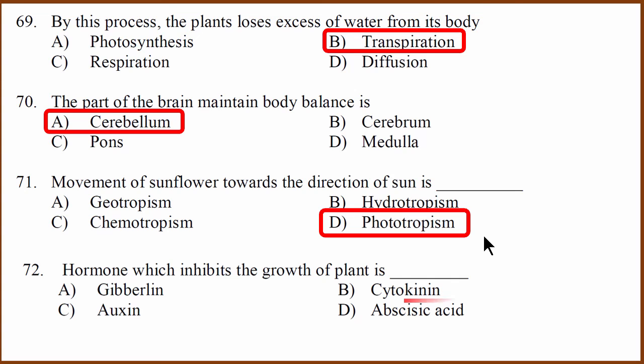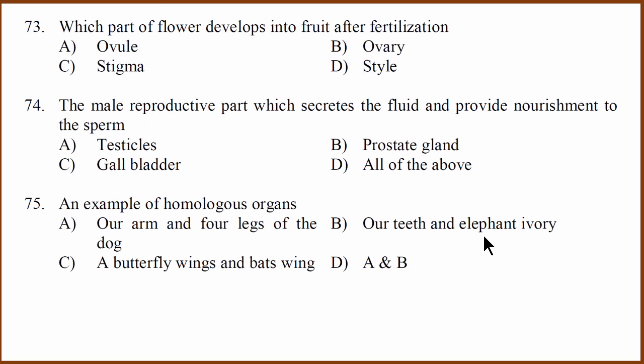Hormone that inhibits the growth of the plant. It's abscisic acid. Again, you have to remember this. Which part of flower develops into fruit? Ovary becomes fruit. Ovule becomes seeds. So the correct answer is B.